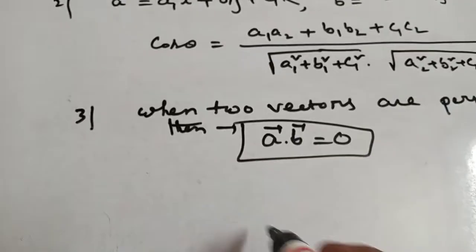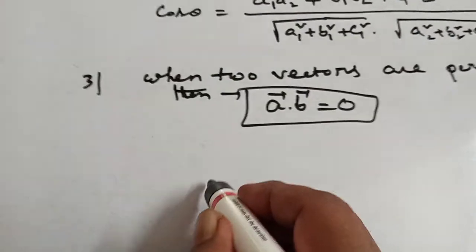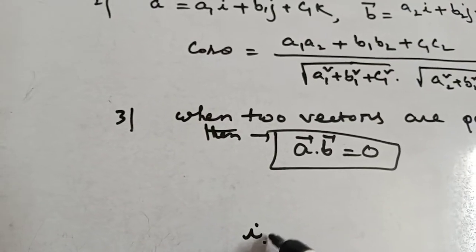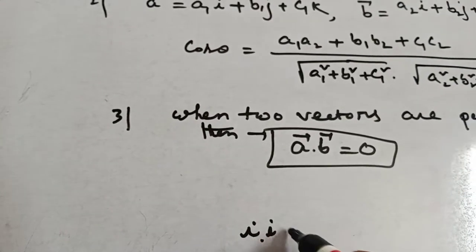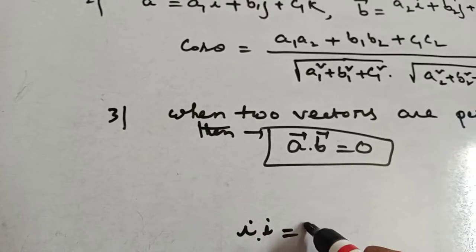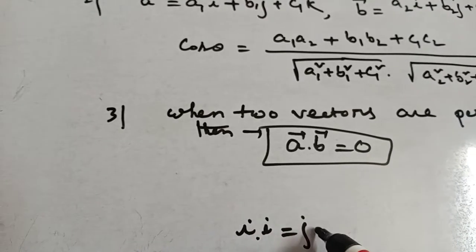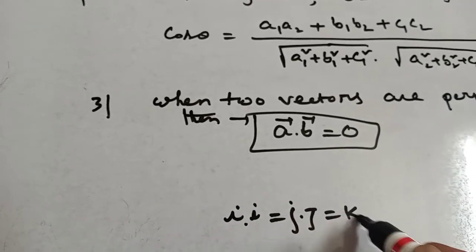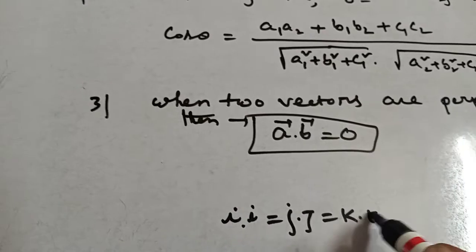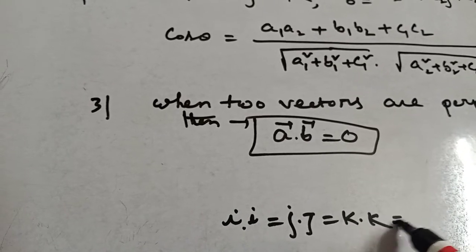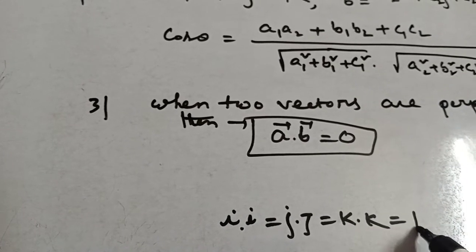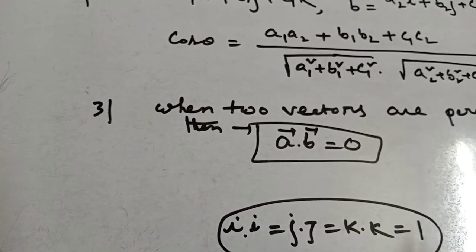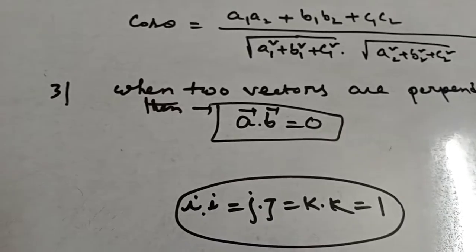Another way: i dot i equals j dot j equals k dot k equals 1. You must remember it.